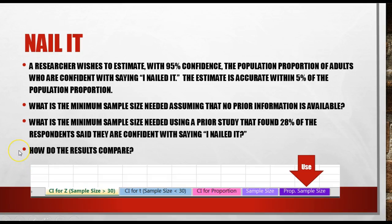In this next one, it says a researcher wishes to estimate with 95% confidence the population proportion of adults who are confident with saying 'I nailed it.' The estimate is accurate within 5% of the population proportion. What is the minimum sample size needed?